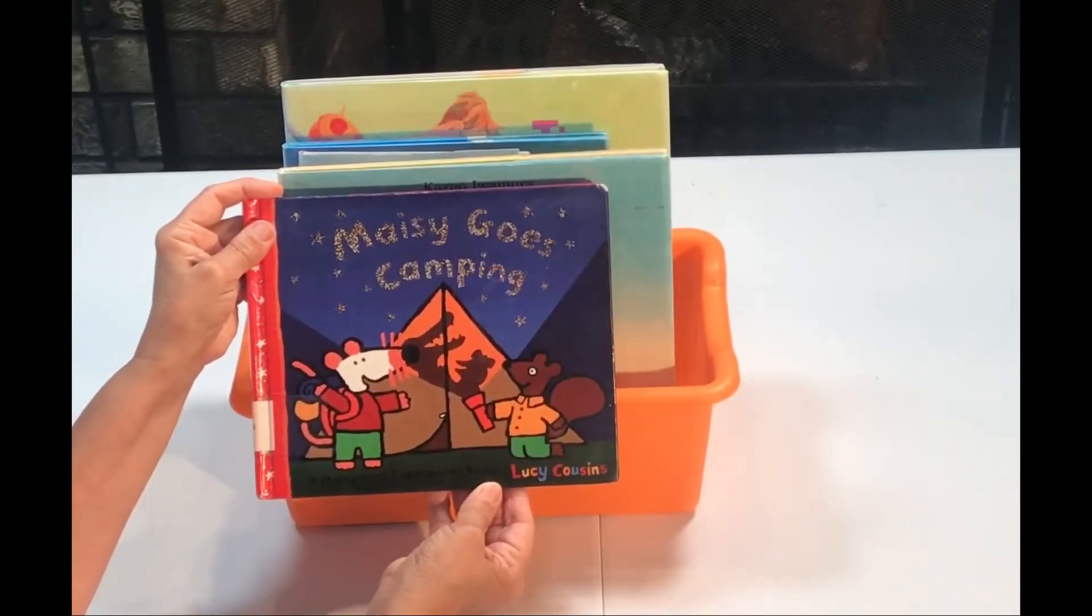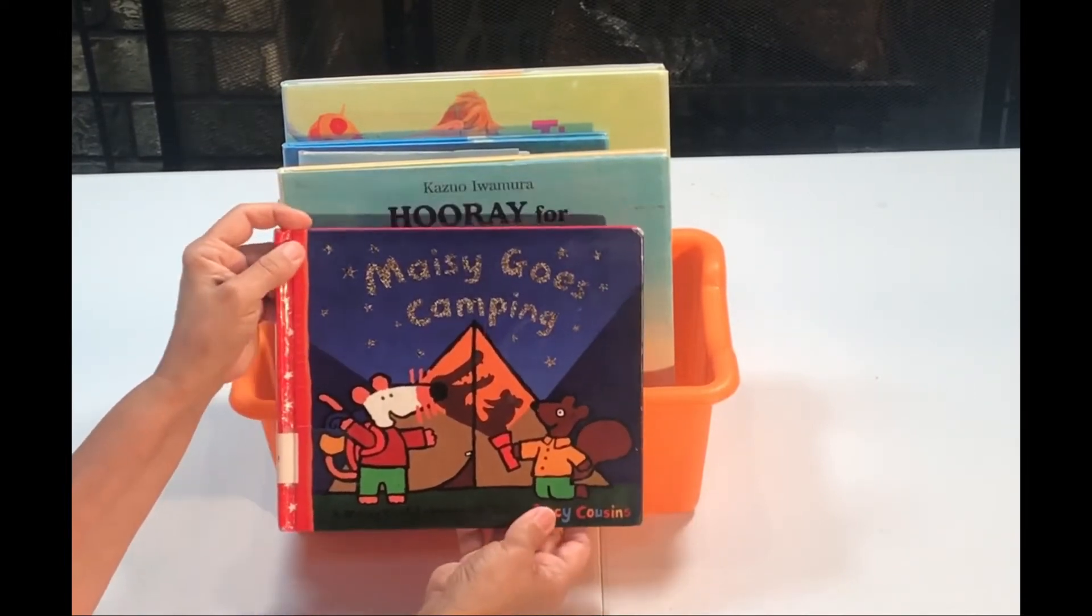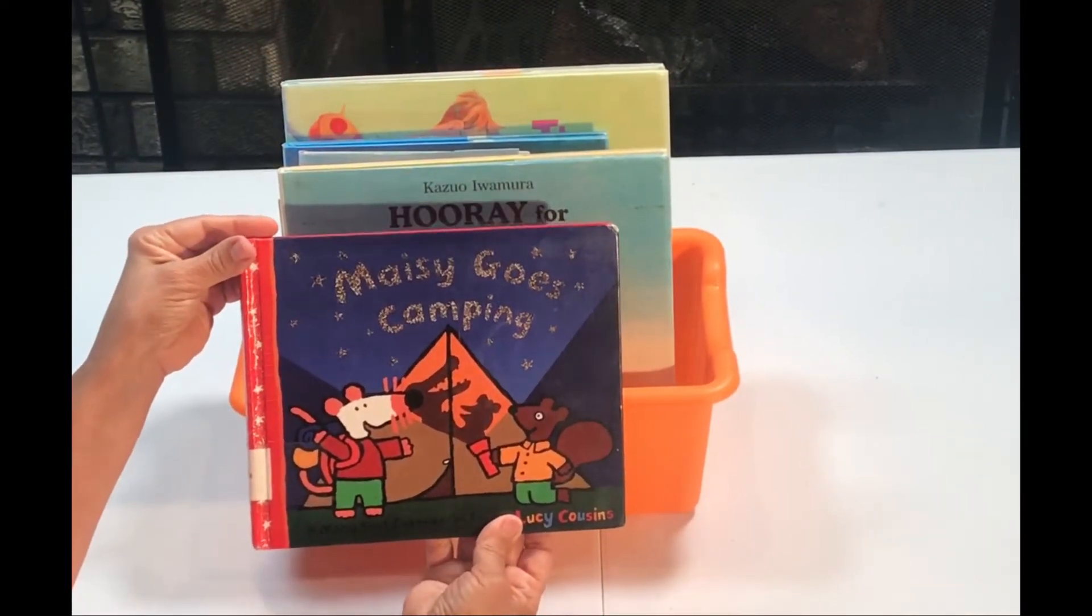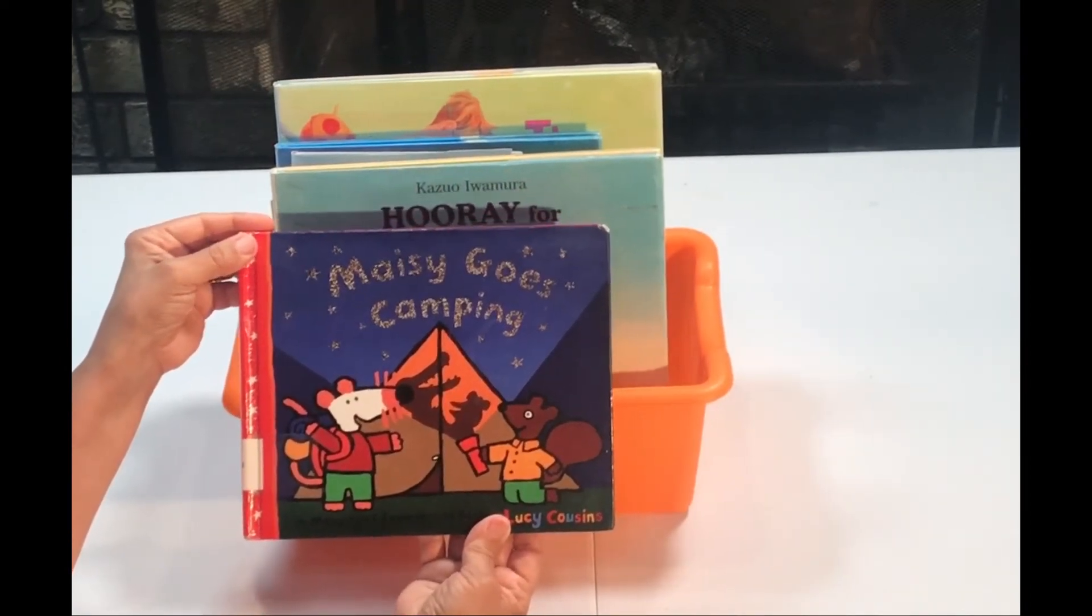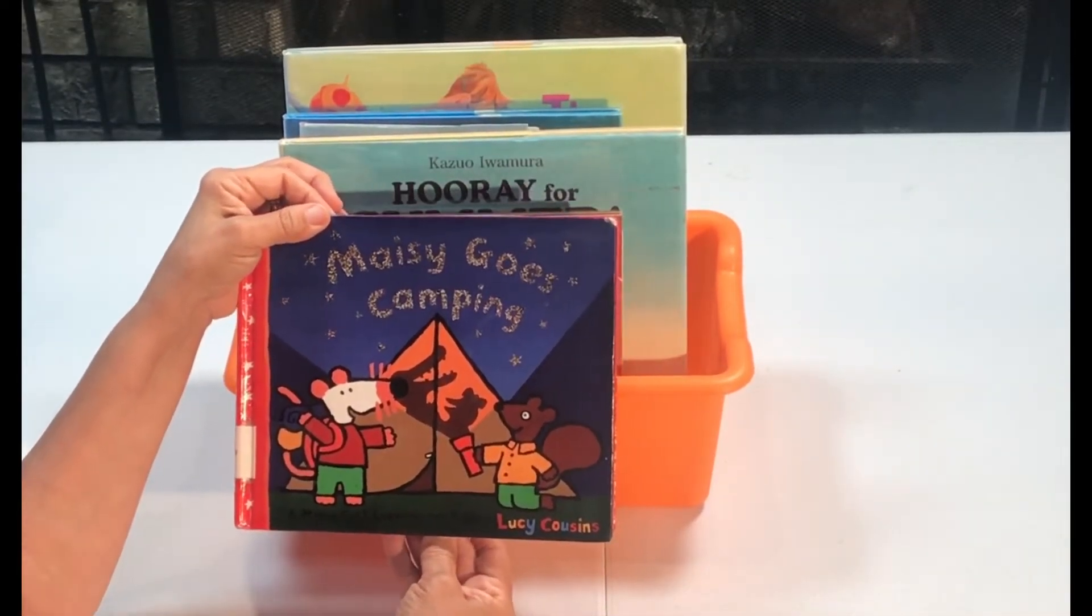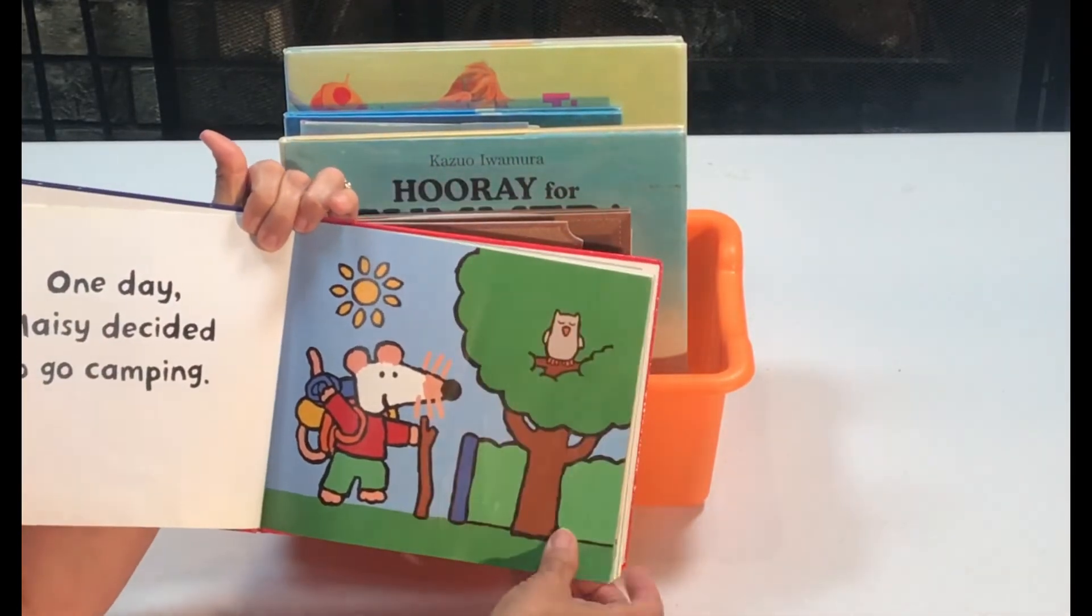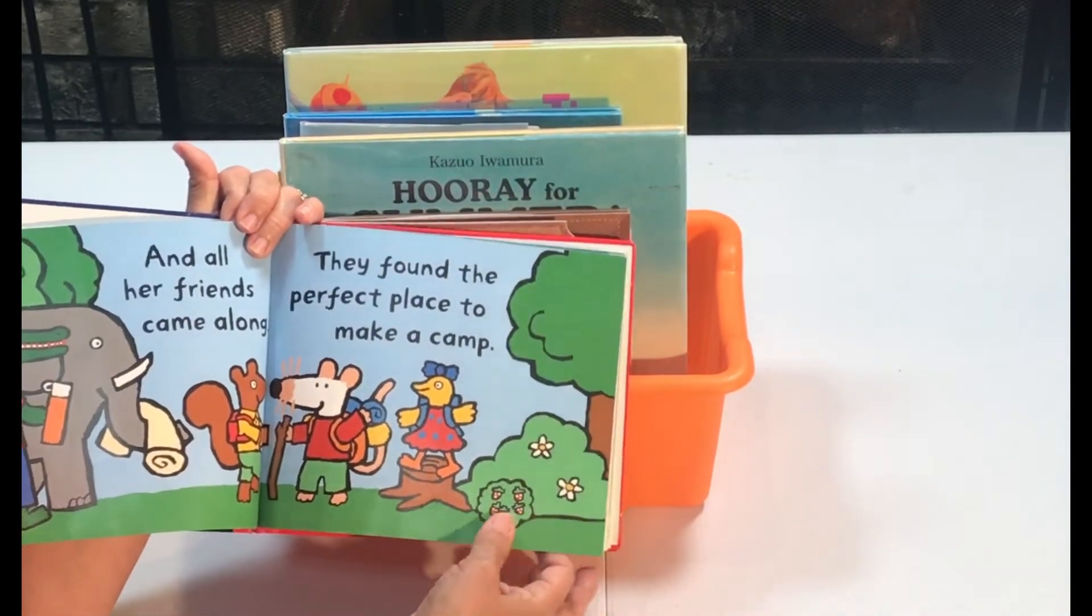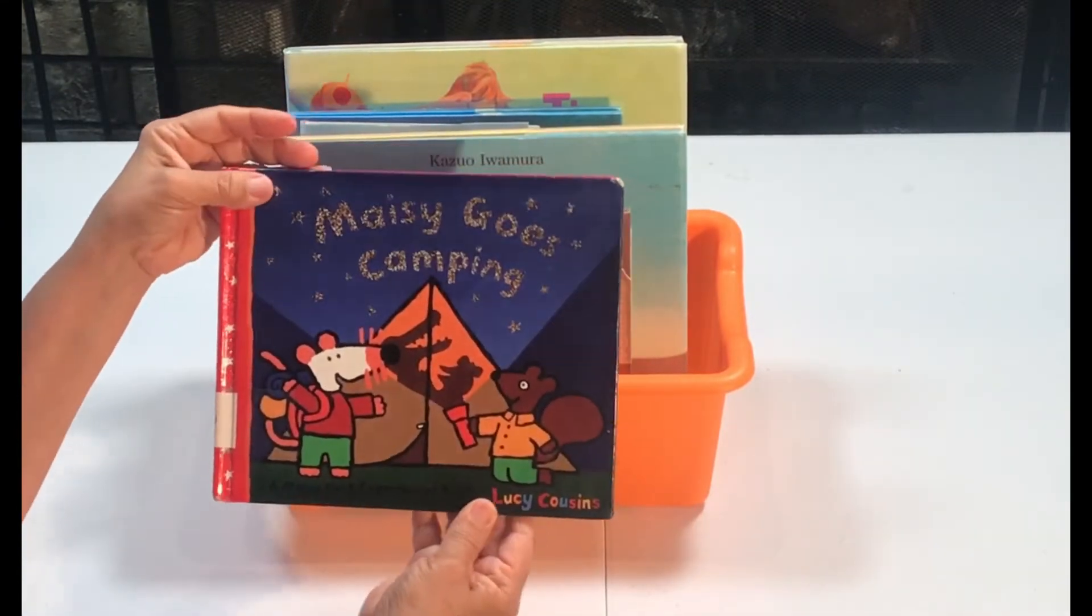This activity is a literacy activity and a vocabulary building activity. As usual I have lots of books. Many of these books are from the library, so we're going to go ahead and read some books about summer and camping. This book is about Macy goes camping. It's a super cute book so we would read the book. We would talk about friends that are going camping and putting up a tent, making some s'mores.